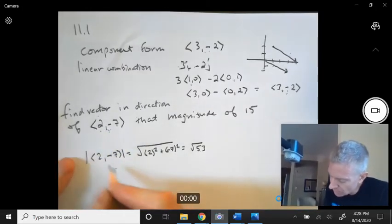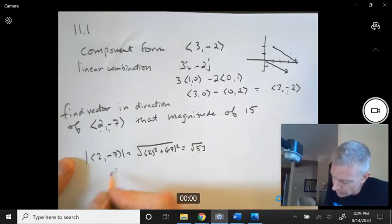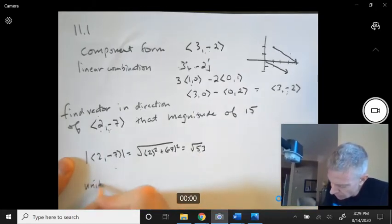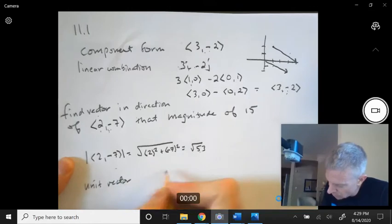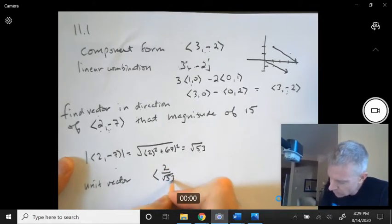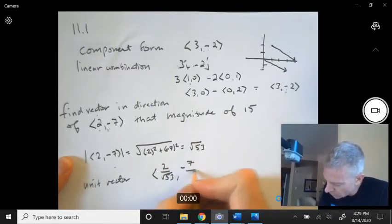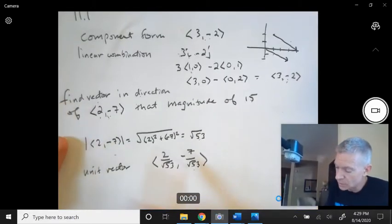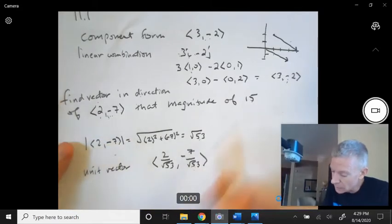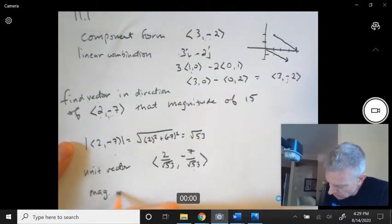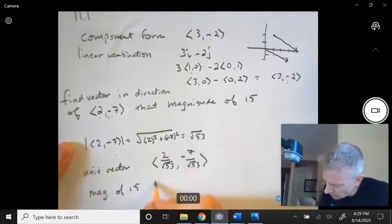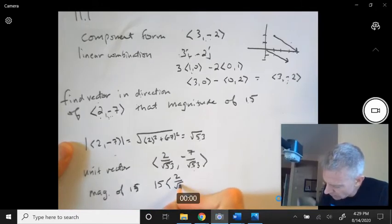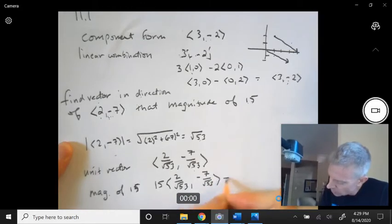If you want to make it a unit vector, we would just have to divide by √53. So the unit vector would be <2/√53, -7/√53>, and we're almost there. There's our unit vector that has this direction. If we now want to have a magnitude of 15, we're just going to multiply by 15. It's 15 times <2/√53, -7/√53>. Multiply that out, you get <30/√53, -105/√53>.